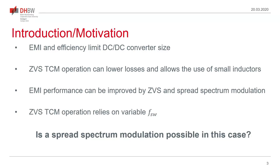The problem, in particular with triangular current mode operation, is that it relies on the variable switching frequency as the control variable. Therefore it is difficult to integrate a simple spread spectrum modulation as in standard DC-DC converters, where we can just change the switching frequency randomly with the duty cycle as the control variable. The question is: is it possible to achieve spread spectrum modulation in the case of a triangular current mode DC-DC converter?